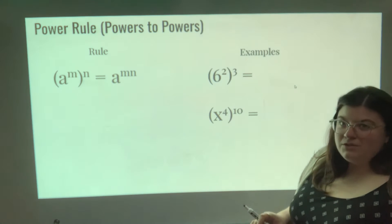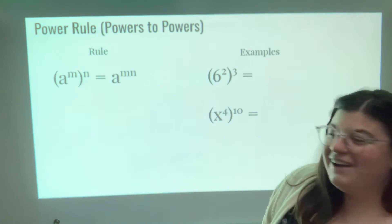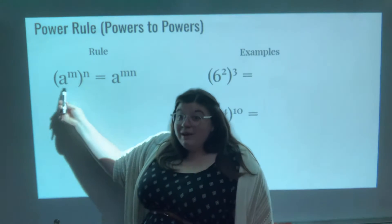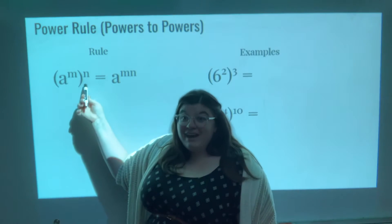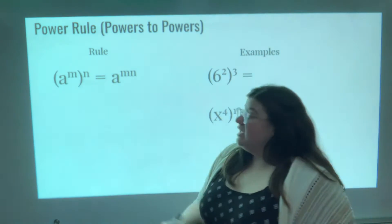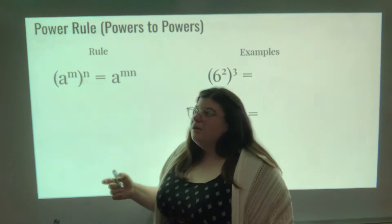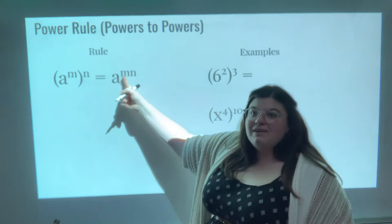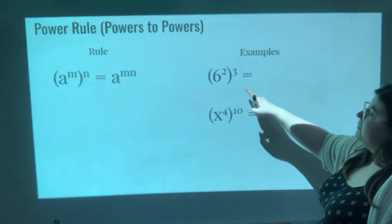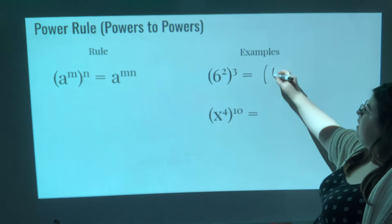The power rule. This is talking about powers to another power. If you have a to the power of m, and then you're raising all of that to the power of n, another power, what you're going to do to simplify these is just take those two exponents, m and n, and multiply them. So it's the same thing as saying a to the power of n times m. For example, 6 squared to the power of 3—I can write it a different way maybe—6 squared to the power of 3, I'm just going to raise it even higher. Same thing.